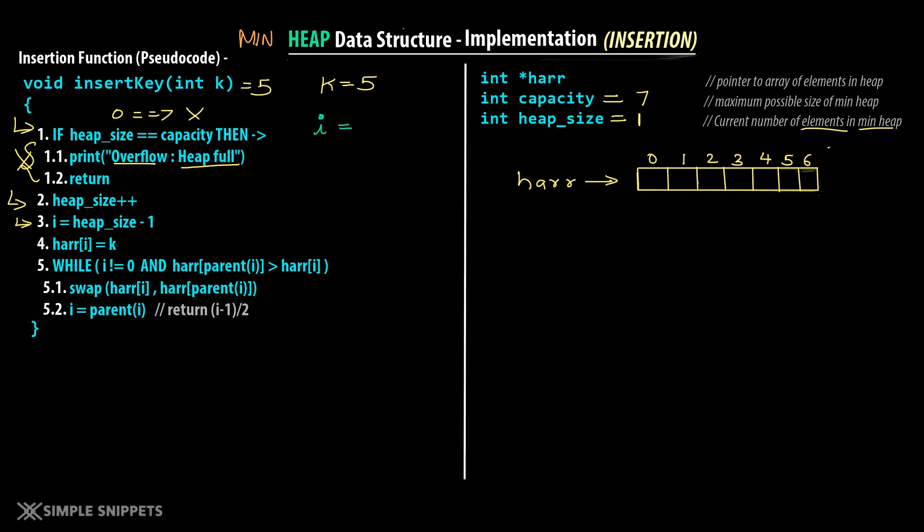Scrolling down in the main function, this is where our menu-driven program is. We take the option number from the user. For the insert operation, we take the value from the user in variable val and call obj.insert_key — obj is the object of the MinHeap class. We take the size from the user, create the object, and perform the different operations. The print array function simply prints out the heap array using a for loop from 0 to heap size. Let's save and compile and run.